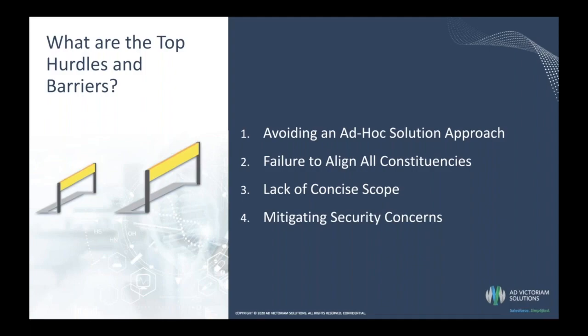The next major hurdle that we see is a lack of a concise scope. Most major transformational undertakings on this scale fail not from execution, but from inadequate scope. Project cost overruns and failure to achieve benchmarks usually arise from not having a clear understanding of the level of effort required for each phase. Working within a program with a proven framework and discovery methodology is one way to ensure concise scope.